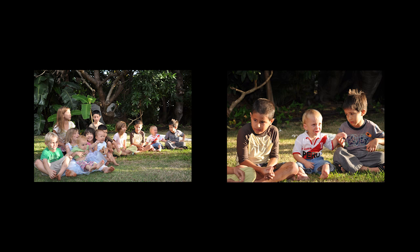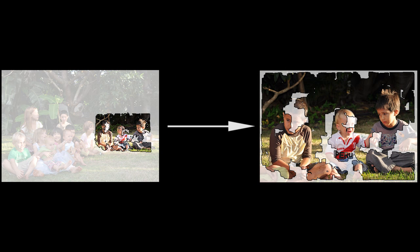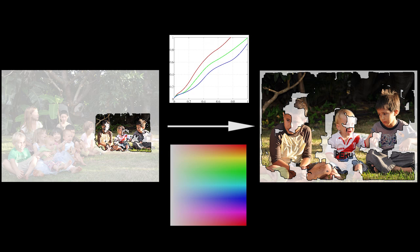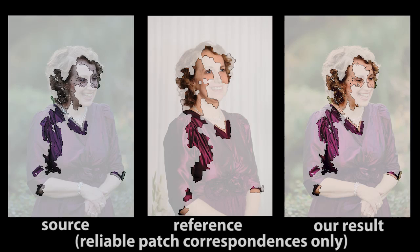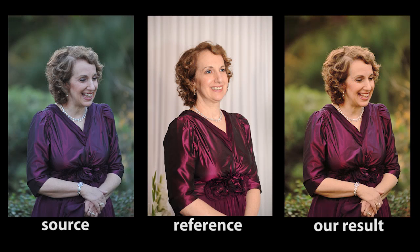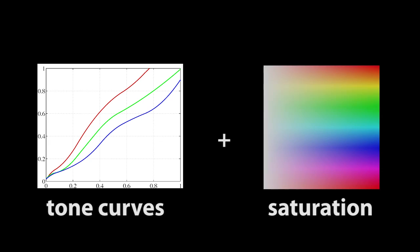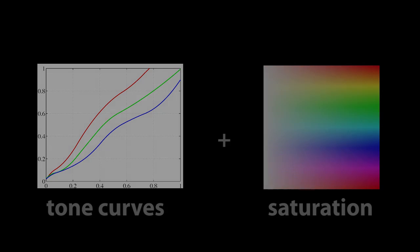Our approach is to jointly recover a model of correspondence between images, including both a dense matching between image regions, and a color transformation model to explain the global color differences between images. The dense region matching is non-parametric, aligning small 8x8 patches of pixels, with a simple gain and bias to achieve robustness to color changes. Because the correspondence does not assume a planar or rigid scene, the algorithm can find matches even in scenes with significant changes of contents or pose. The color transformation is a parametric model, combining per-channel non-linear tone curves with a saturation matrix for cross-channel adjustments. This parametric model can extrapolate from the regions with known correspondence to other regions where the correspondence is unknown.